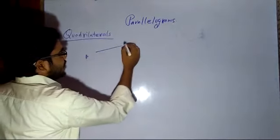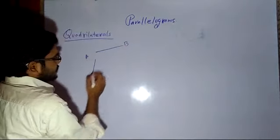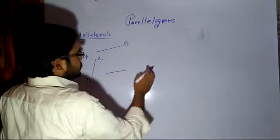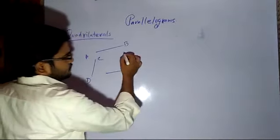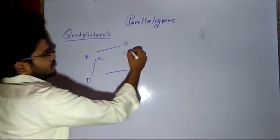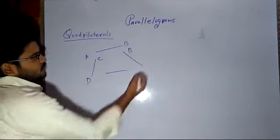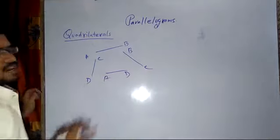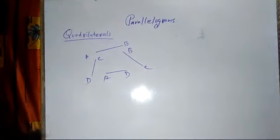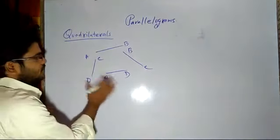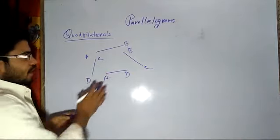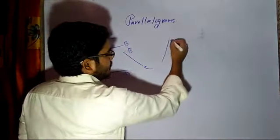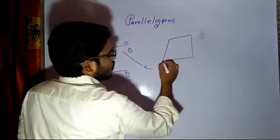That means, if I have line segments say AB, another line segment CD, and we have segments from B to C, C to D, A to D and so on. Like this, we are having 4 line segments. If I join them in such a way that they form a closed figure.